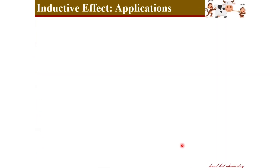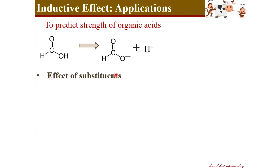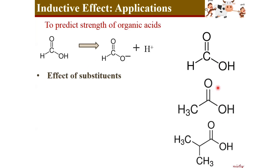Now let's see some applications of the inductive effect. We can explain a number of structural features on its basis. One of the most important applications is explaining the strength of organic acids. Organic acids are acidic because they can donate their proton to form a carboxylate anion. Let's see the effect of substituents on the acidic nature of organic acids by considering formic acid, acetic acid, and propanoic acid.